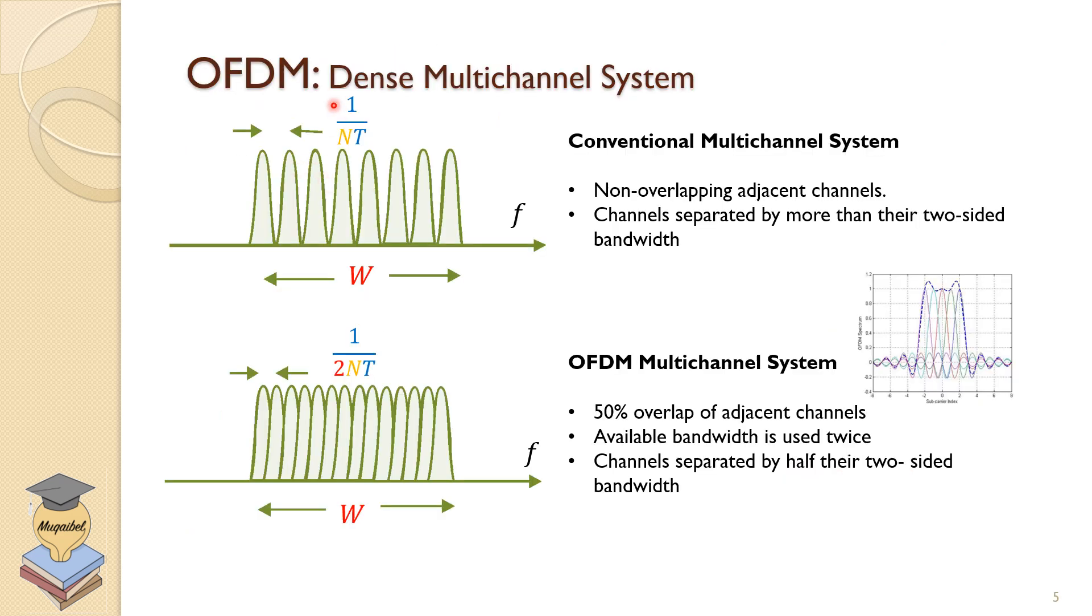Now, let's look at when do we call the system dense multi-channel system. Recall for the case of conventional multi-channel systems, we try to divide the band into non-overlapping adjacent channels. Channels are separated by more than their two-sided bandwidth. So we don't have overlap here. The entire bandwidth is divided into 1/(NT), where N is the number of channels. But with OFDM, we can do better than a non-overlapping system. And we can have 50% overlap of adjacent channels. Because available bandwidth now can be utilized more efficiently, and we have double the advantage. Channels separated by half of their two-sided bandwidth. And we can make sure that they are separable by the fact that they are being orthogonal. So we have dense multi-channel system in the case of OFDM.